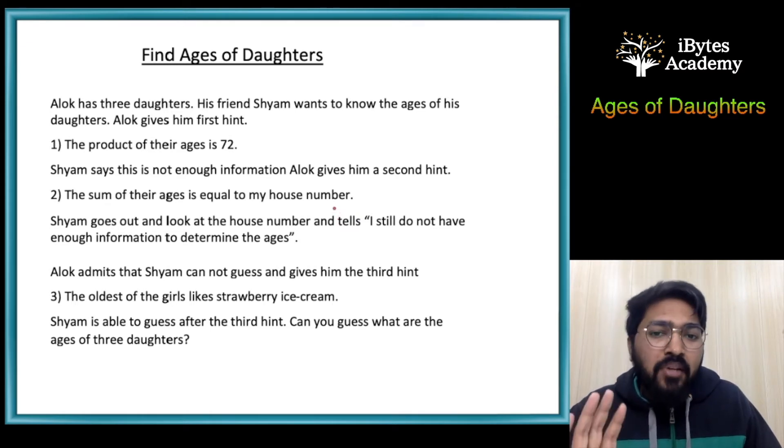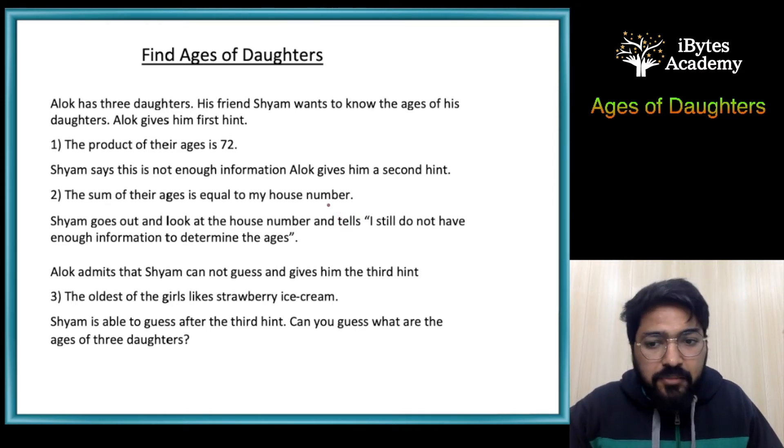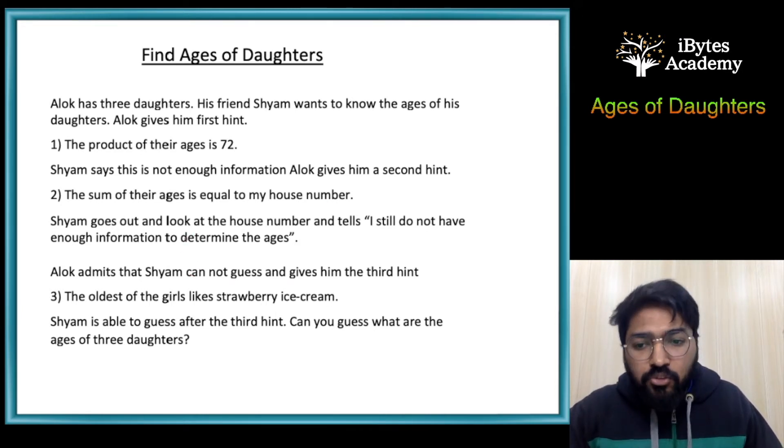Alok admits that Shyam cannot guess and gives him the third hint. The oldest of the girls likes strawberry ice cream. Shyam is able to guess after the third hint. Can you guess what are the ages of the three daughters?